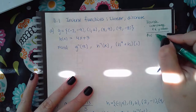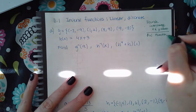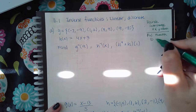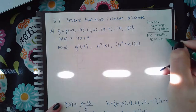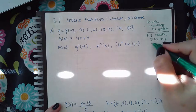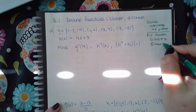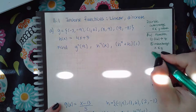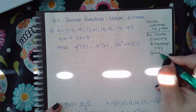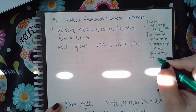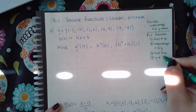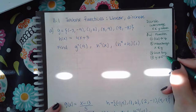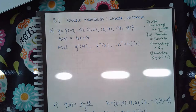Step one: change f(x), g(x), or h(x) into y. Step two: interchange x and y — the same idea as with discrete functions. Step three: solve for y, and then change y back into function notation. Because you switched the x's and y's, it's no longer the regular function — now it's the inverse of that function.